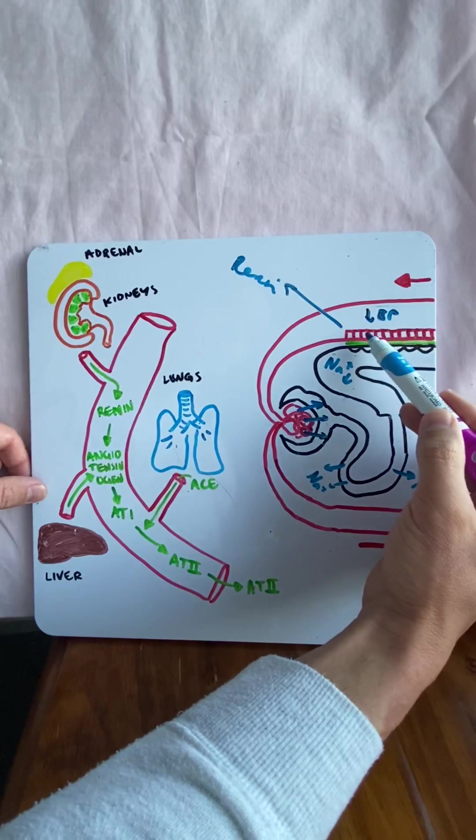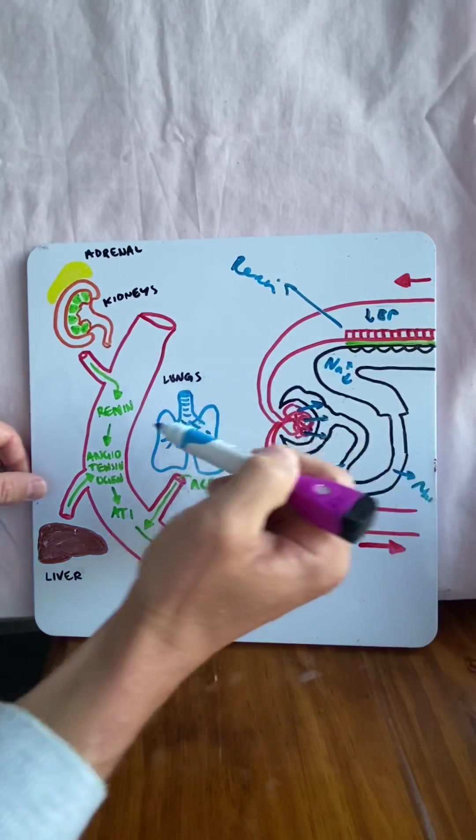The third way is the sympathetic nervous system can directly innervate the granular cells to release renin.